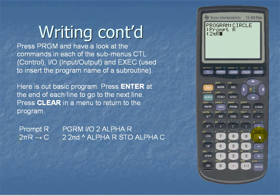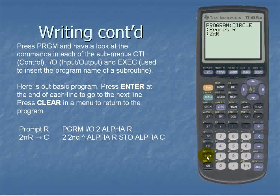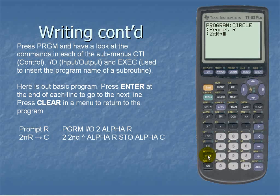For radius we'll hit alpha. We'll find our letter R. The STO is actually located above the on key. And for C we'll hit alpha and the letter C. To return to the next line we'll simply hit enter.